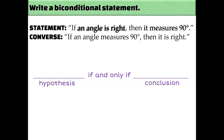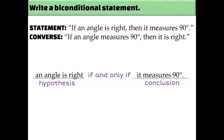Let's fill in the blanks. The hypothesis is 'an angle is right' and the conclusion is 'it measures 90 degrees.' Putting that all together: an angle is right, if and only if, it measures 90 degrees. Notice the formatting is different from conditional statements — I don't start with 'if' and there's no 'then.' Instead, I start with the hypothesis, put 'if and only if' in between, and end with the conclusion.